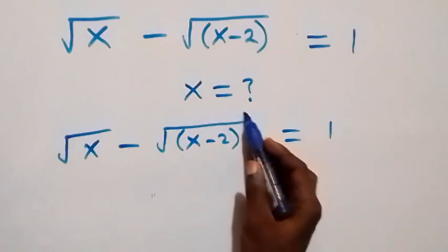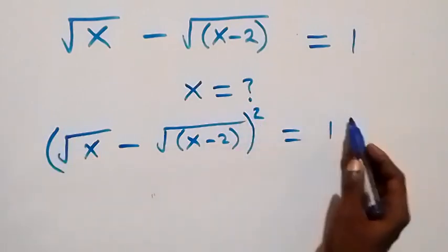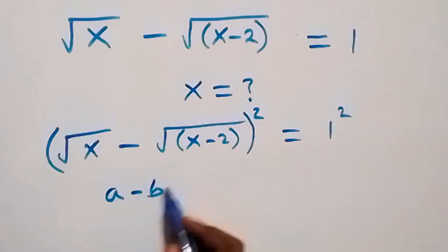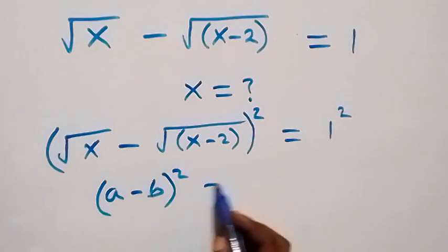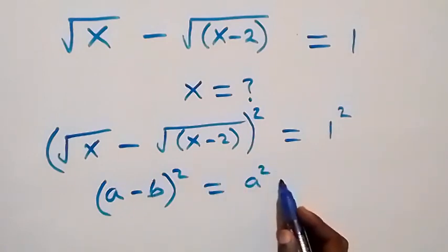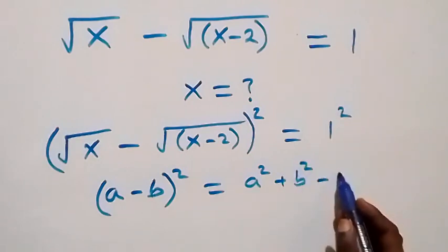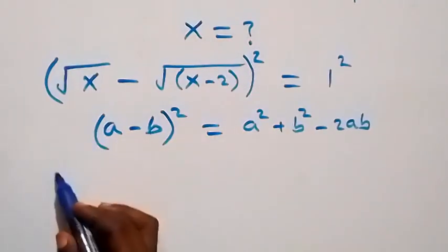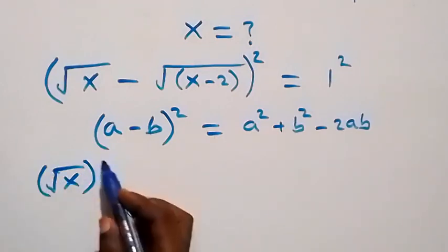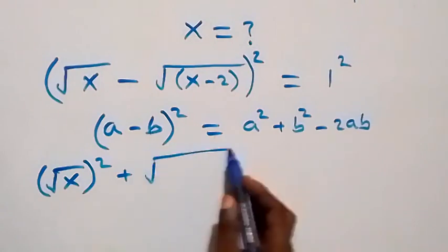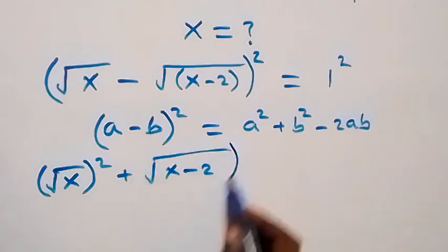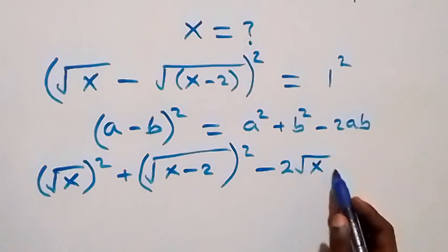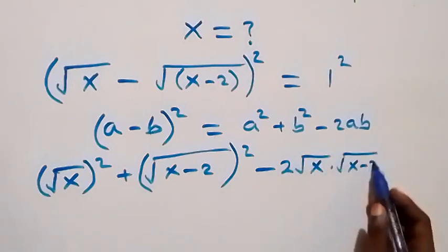So we take the square on this side and also the square on this side. When we have (a - b)² this can be written as a² plus b² minus 2ab. Then here this gives us (√x)² then plus (√(x-2))² then minus 2 times √x times √(x-2).